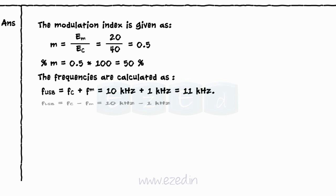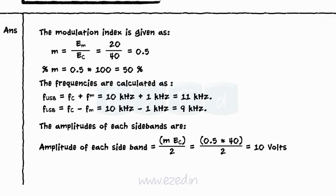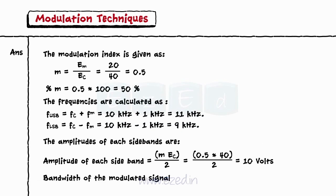And lower sideband frequency equals carrier frequency minus modulating signal frequency equals 9 kHz. The amplitudes of each sideband are m·Ec/2 equal to 10 volts. And the bandwidth required is 2 × fm equals 2 kHz.